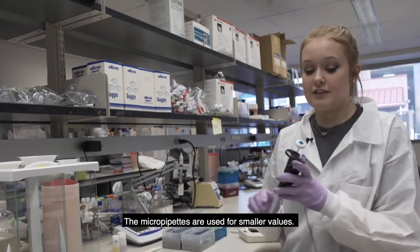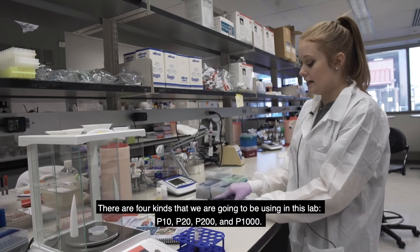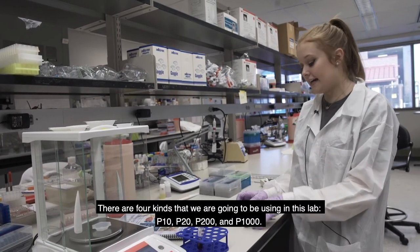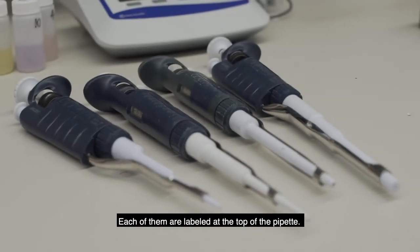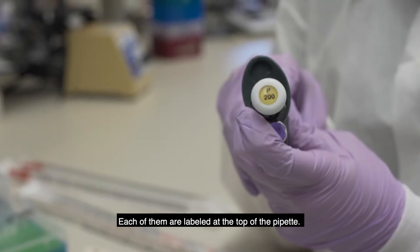The micropipettes are used for smaller values. So there's four kinds that we're going to be using in this lab, the P10, P20, P200, and P1000. And each of them are labeled at the top of the pipette.